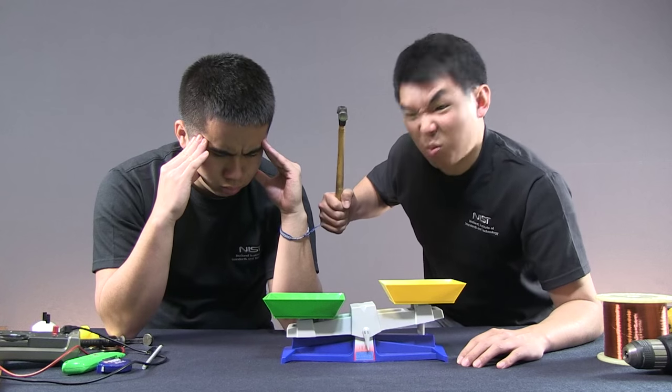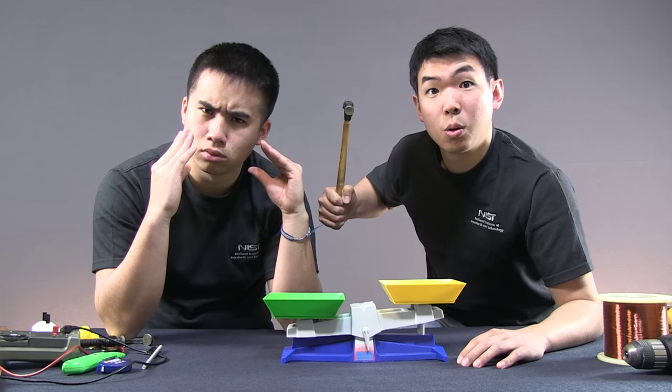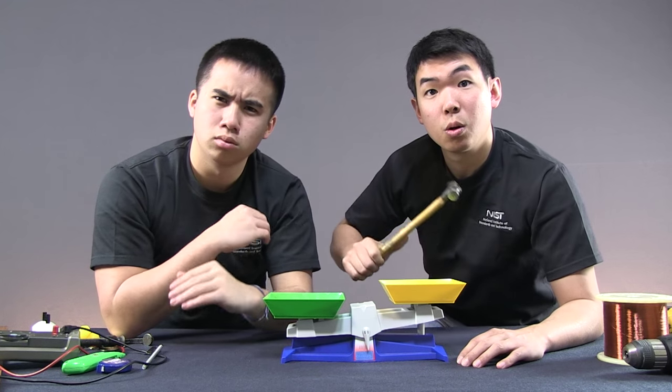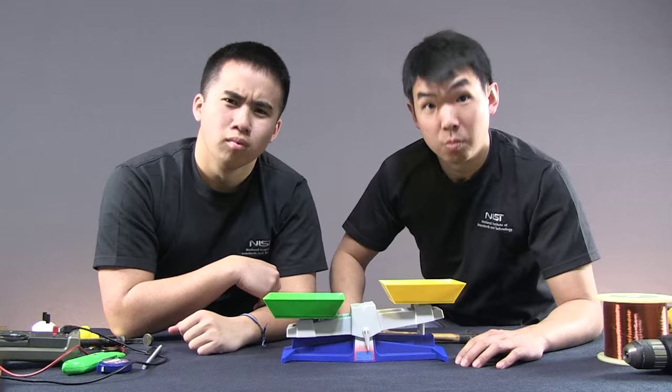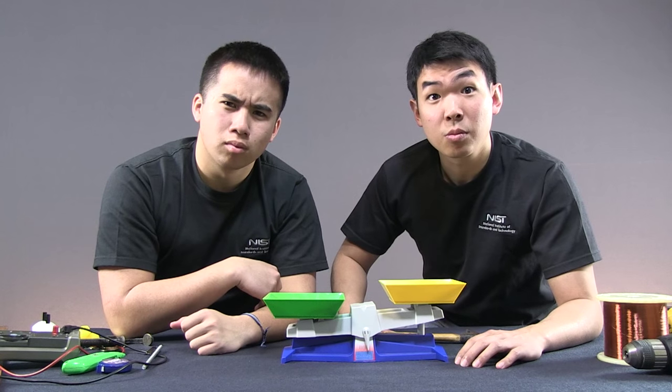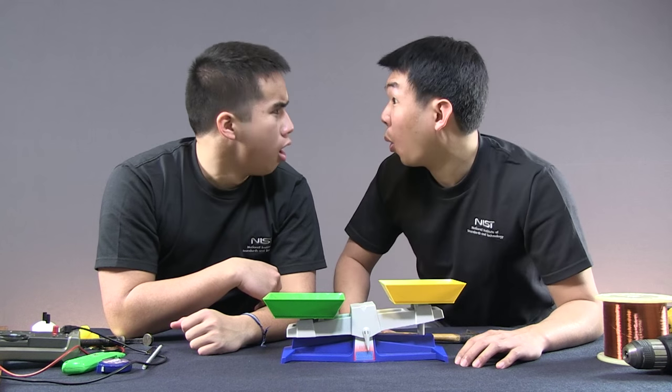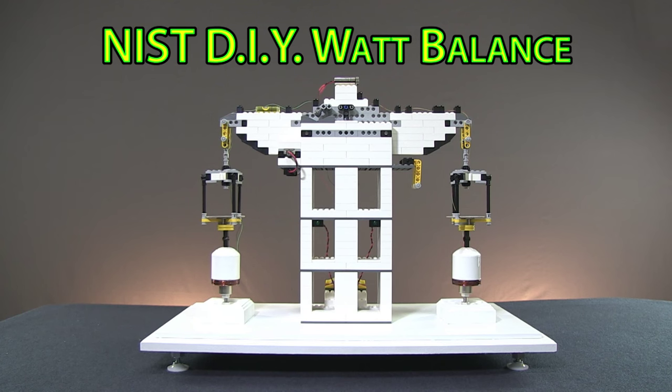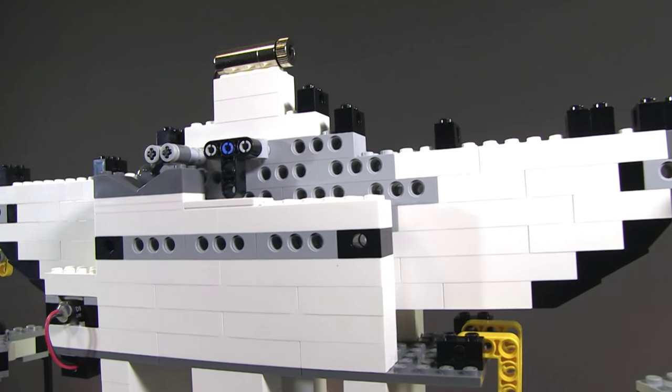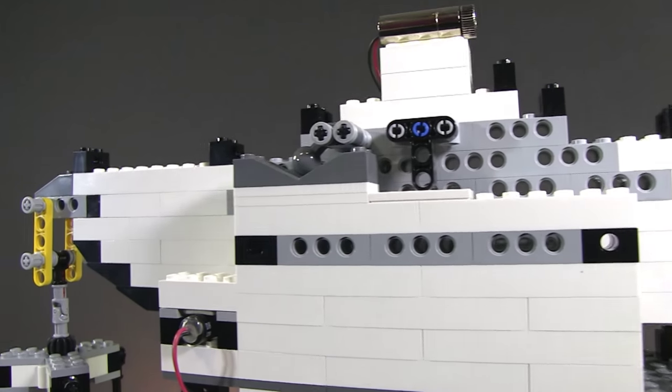Hey you two, are you tired of low accuracy measurements? Would you like to weigh household objects with the precision of cutting edge physics? Well now you can with the NIST Do-It-Yourself Watt Balance, made with LEGO bricks. That's right, the NIST Do-It-Yourself Watt Balance is the answer to all your high accuracy mass measurement needs.